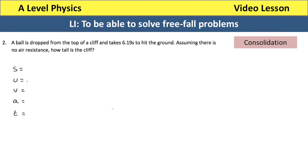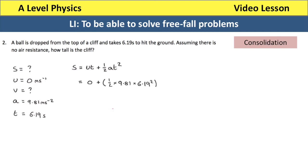Question two. A ball is dropped from the top of a cliff and it takes 6.19 seconds to hit the ground. Assuming no air resistance, how tall is the cliff? S is unknown, U is zero because the ball is dropped, A is 9.81, and time is 6.19 seconds. We use S equals UT plus a half AT squared; since U is zero, S equals a half times 9.81 times 6.19 squared, giving an answer of around 188 metres.